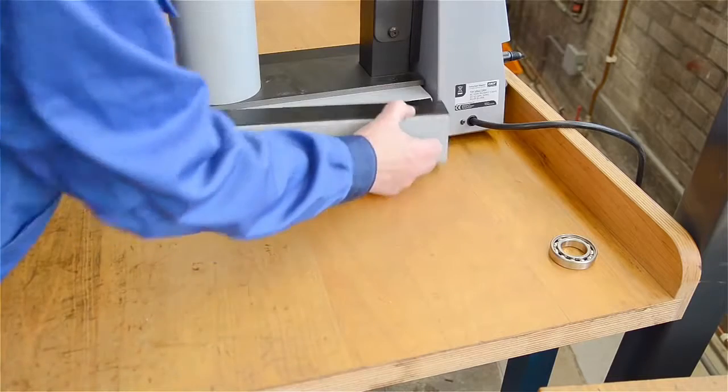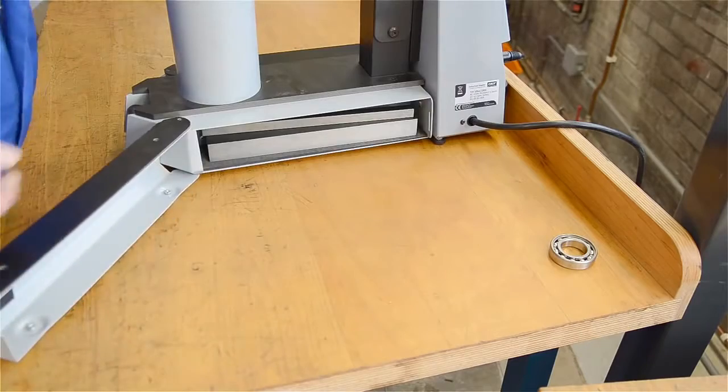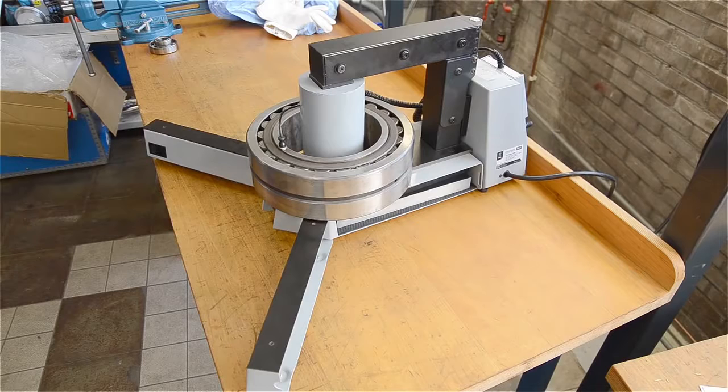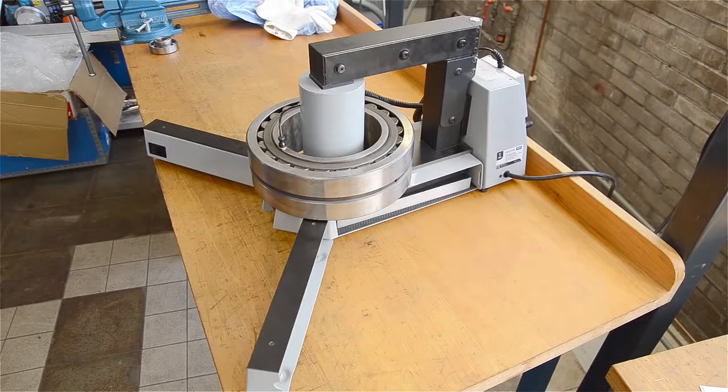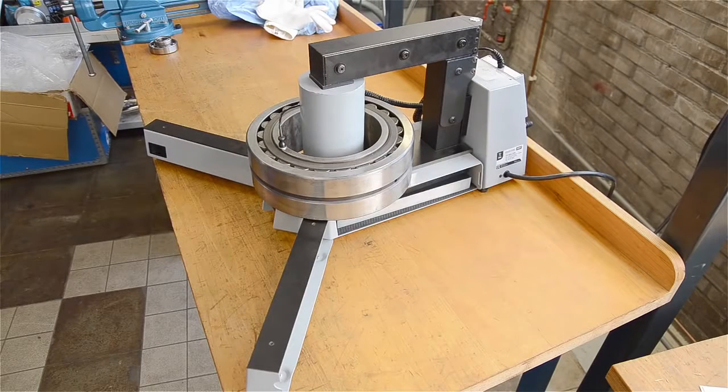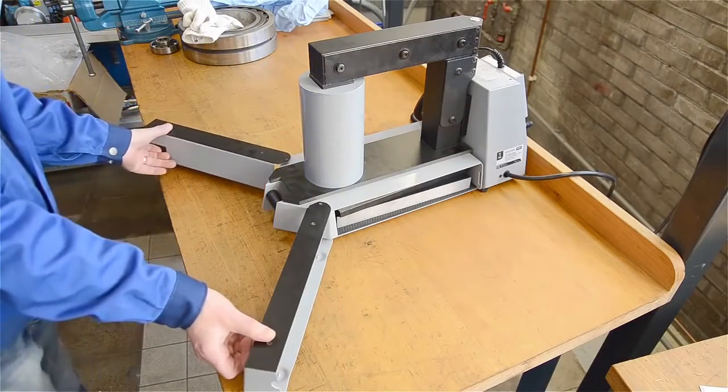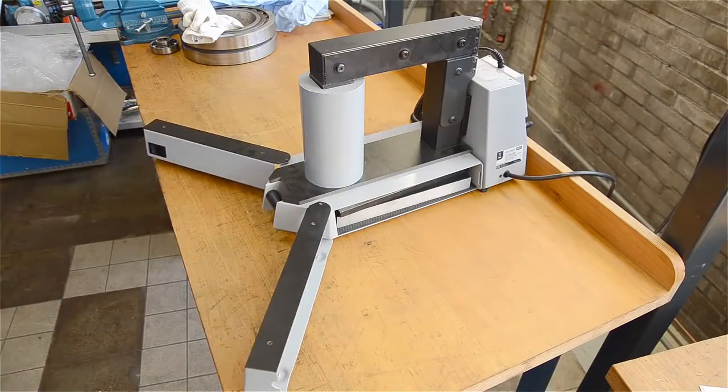Choose the appropriate yoke for the bearing to be heated and place the bearing on the yoke. Better still, if there is space around the coil, place the bearing here for even higher efficiency. SKF heaters have built-in adjustable support legs to make this option really easy.